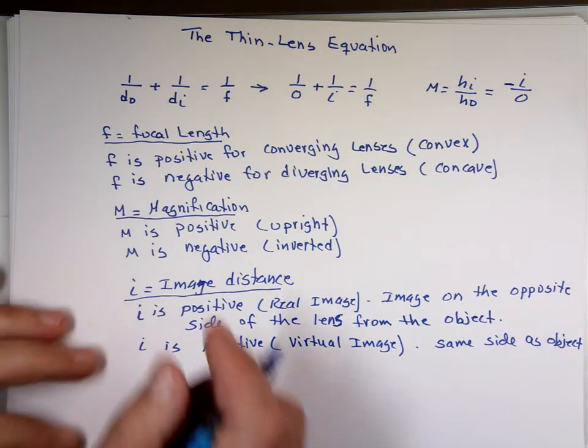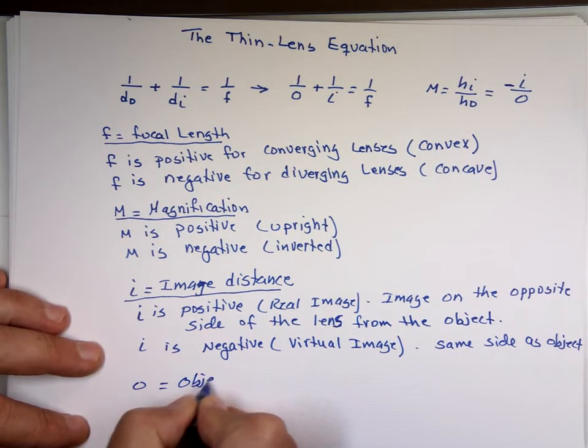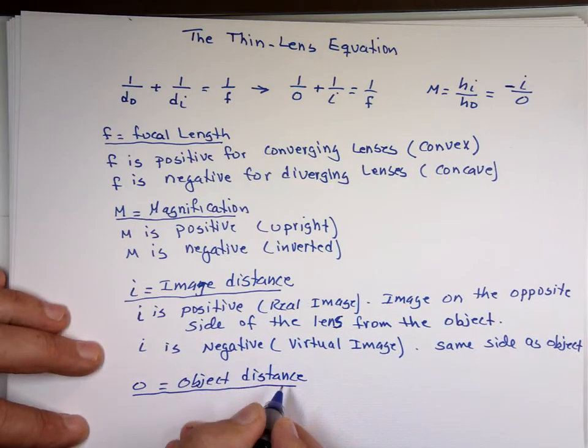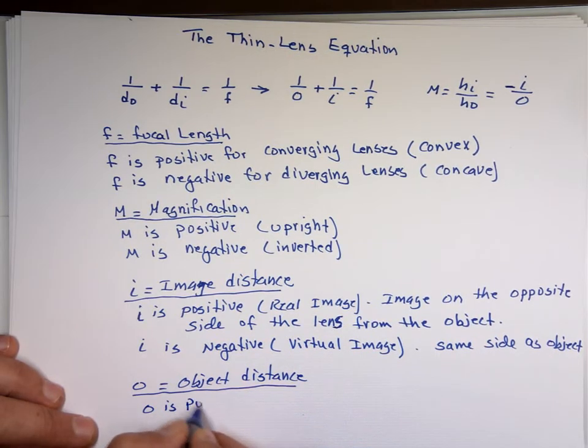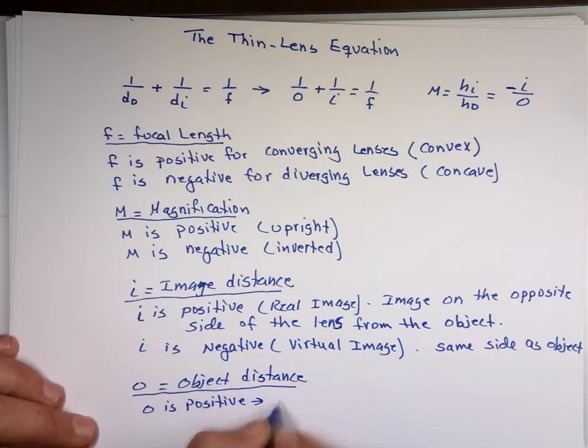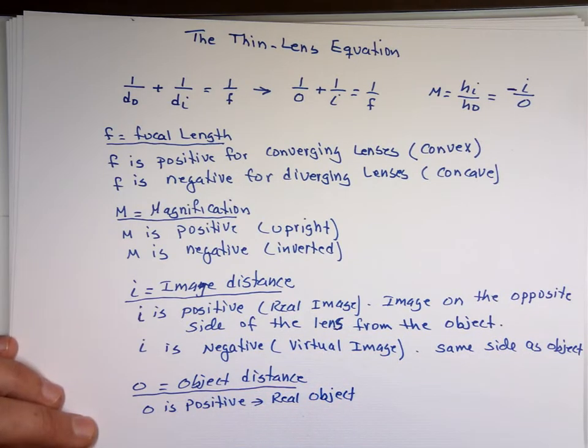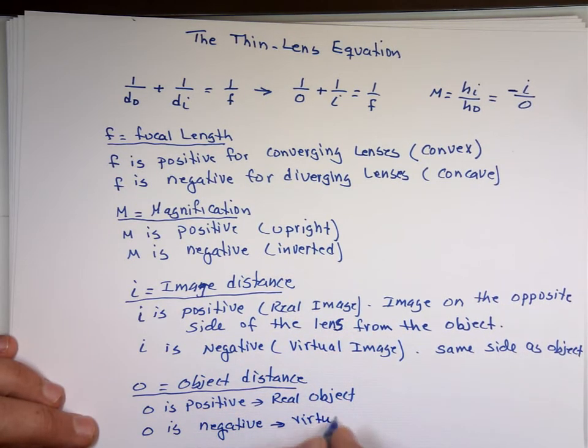And the last one is O, which is object distance. O is positive means we have real object. O is negative - this is where it comes in handy when you have two lenses or three lenses - that means you have virtual object.